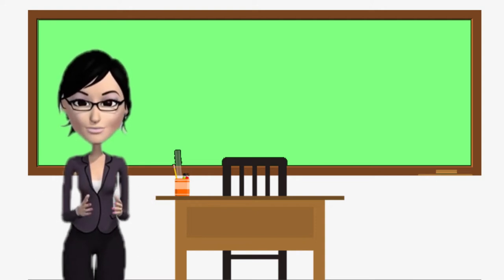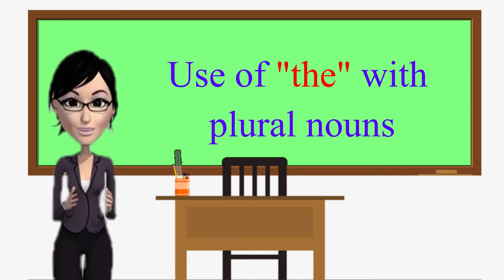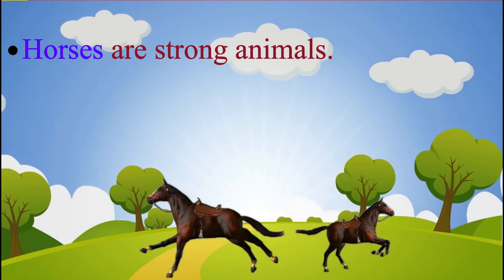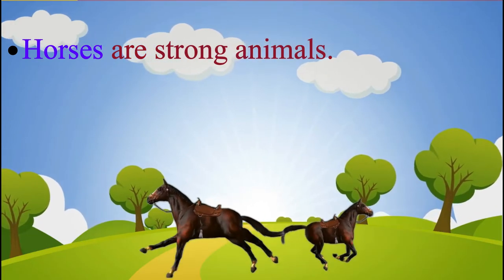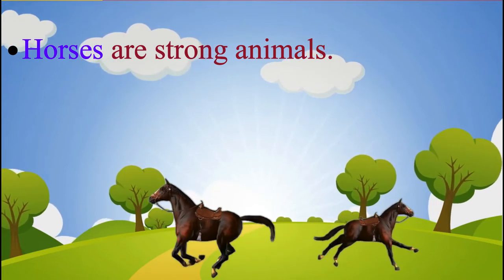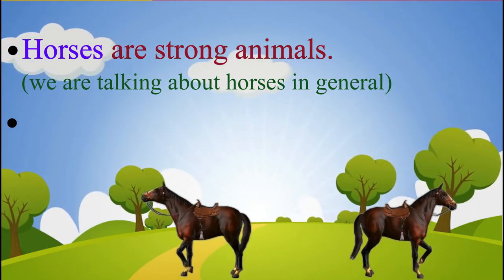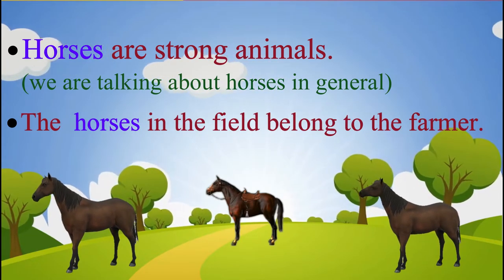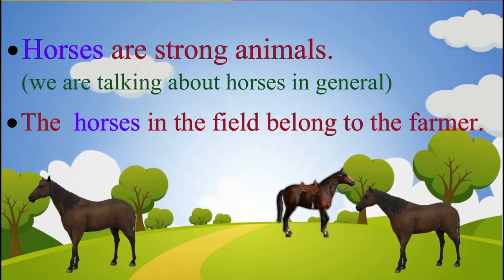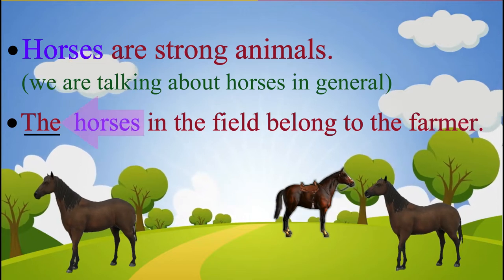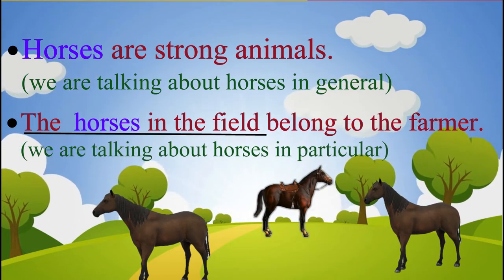Let us now see the use of 'the' with plural nouns. 'Horses are strong animals.' In this sentence, we do not use an article because we are talking about horses in general. Now consider: 'The horses in the field belong to the farmer.' In this sentence, we use 'the' before horses because we are talking about horses in particular.